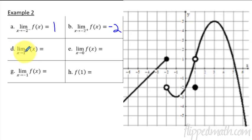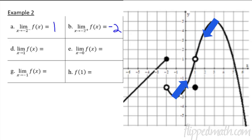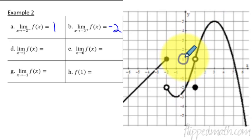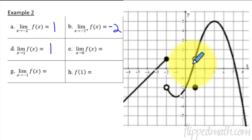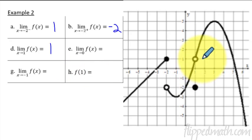Now the limit as x approaches 1 — no plus or minus, so both sides. Coming to x equals 1 from both sides, the graph is headed together at a y value of 1. Just because there's an open circle doesn't matter for the limit, as we learned last lesson. Note that f of 1 — the actual function value — is down at negative 2. There's an important difference between where the limit is headed and where the actual graph is.